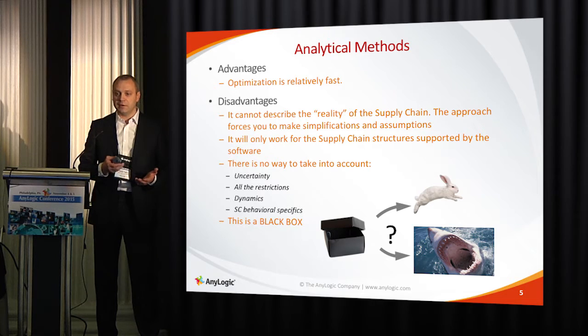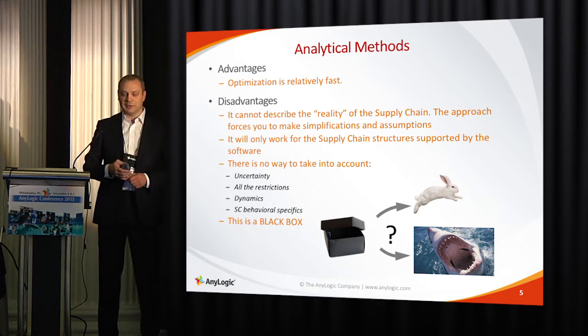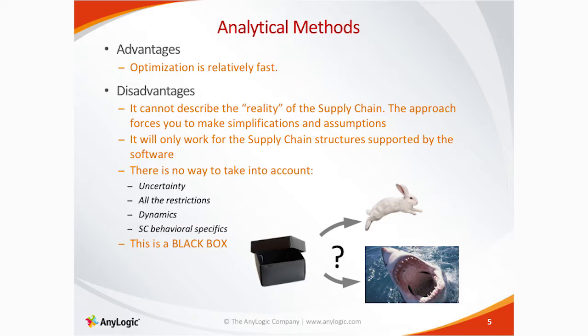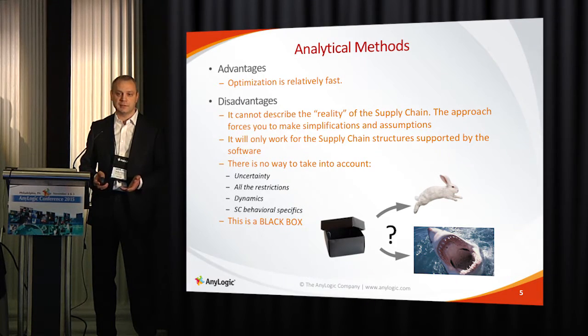You have to abstract from many things, like uncertainty and dynamics. System dynamics does allow you to take some dynamics of the supply chain into account, but again, that requires a lot of simplifications, and you are not able to address all the specifics of your supply chain behavior. Essentially, it's a black box — you never know what the results will be. An analytical system that works for one problem may provide completely different results for an almost identical problem, and you have no control over that — no way to check.